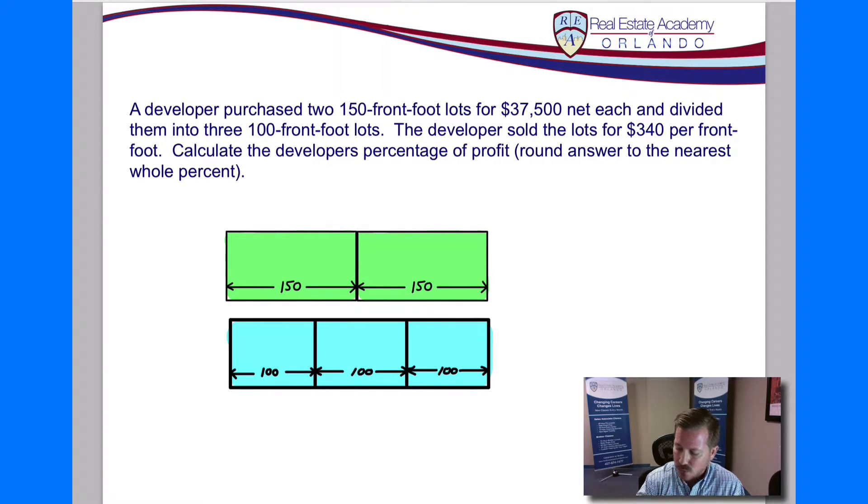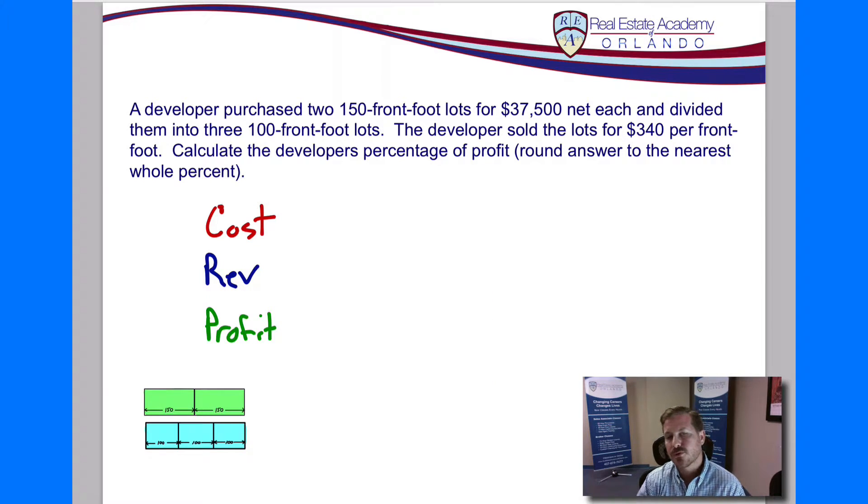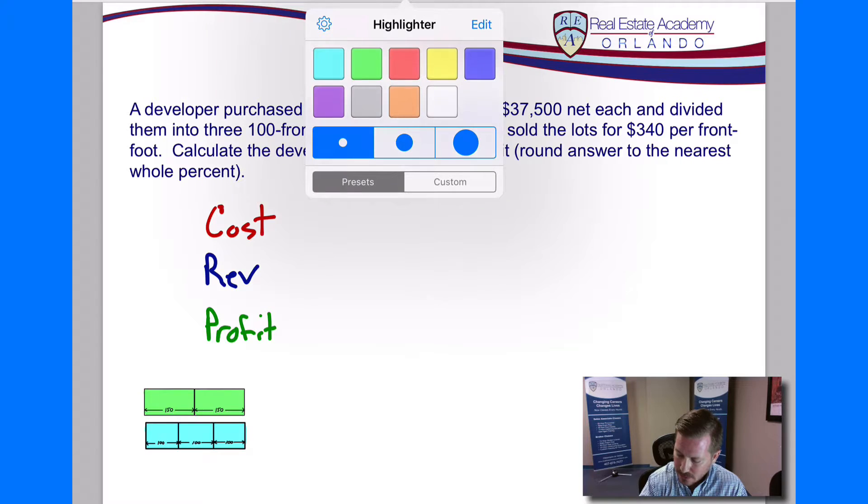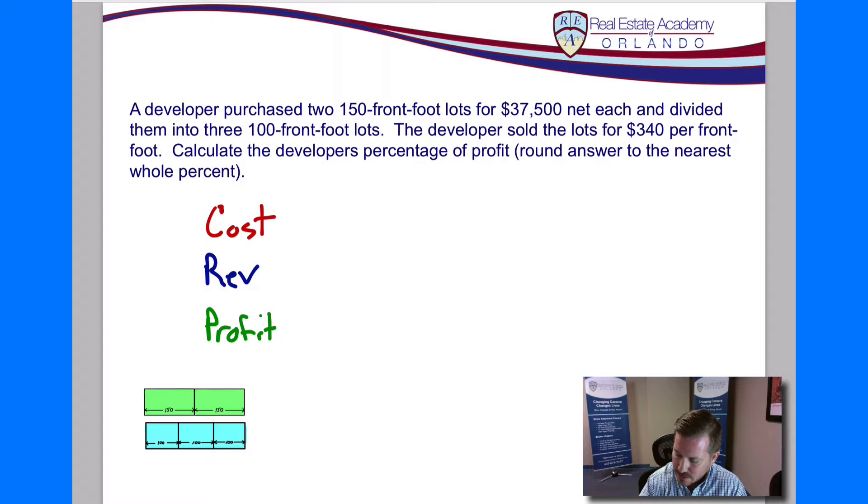So now let's take a look at how do we solve this. To solve this problem, we're going to need to know three things. We need to know the cost, we need to know the total revenue, and we need to know what the profit is. So let's start with the cost. The cost here, we start right in the beginning, and it tells us that our cost is we bought two lots for $37,500 net each. So our cost here is going to be two times $37,500 each, and that's going to be a total of $75,000.